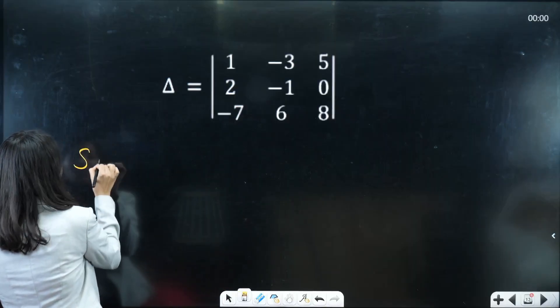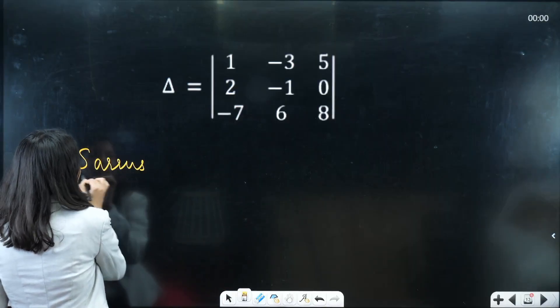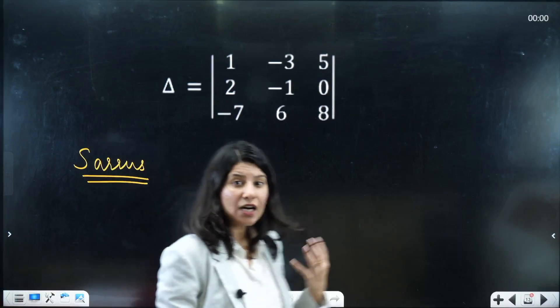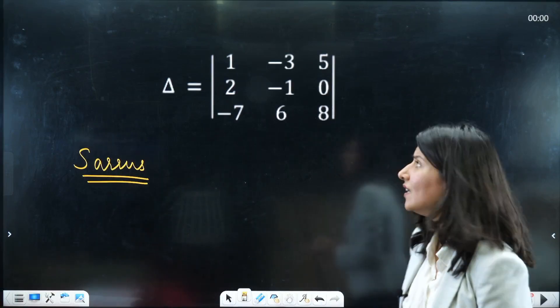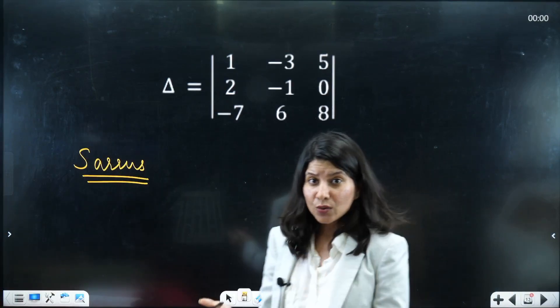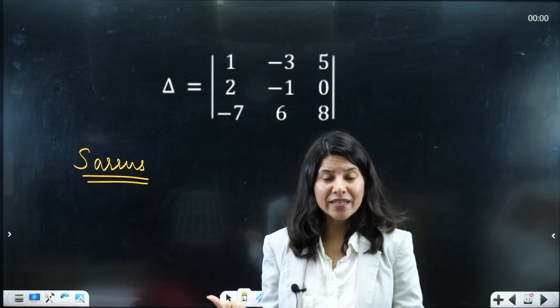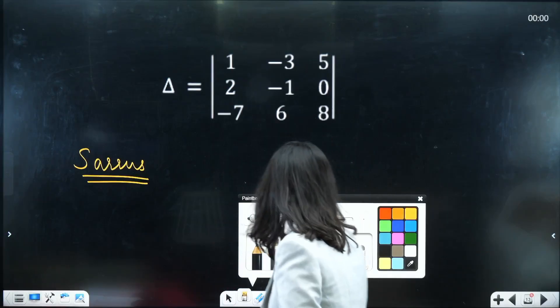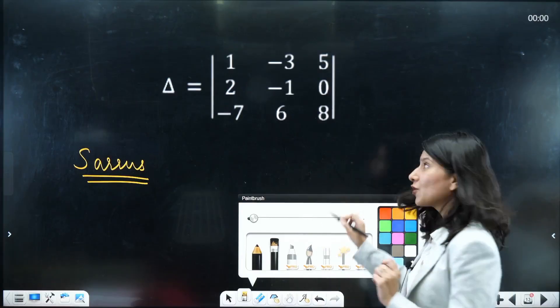And by the way this shortcut was given by Sarrus. So this is Sarrus rule and rather than calculating determinant of a 3×3 matrix in traditional way, I have a shortcut for you. Let me just write down that shortcut.